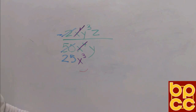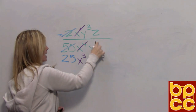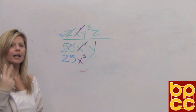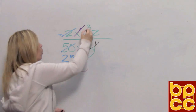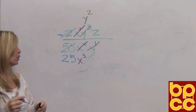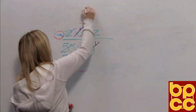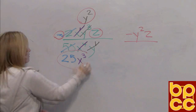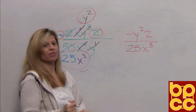Now we divide the y's. This is y cubed over y to the first. We subtract exponents: 3 take away 1 is 2. That y squared goes to the numerator because that's where there were more y's. And the z has nobody to divide with, so it stays put. In your numerator, you have a negative y squared z. In your denominator, you have 25x cubed. And if you prefer to move the negative back to the middle of the fraction bar, that is fine.